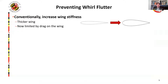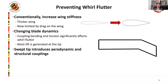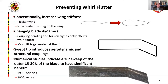A proposed solution is to change the blade dynamics and alter the aerodynamic forcing on the rotor. The coupling of the bending and torsion motion of the rotor blade significantly affects Whirl Flutter. And since most lift is generated at the tip of the blade, by adding a swept tip, we can introduce aerodynamic and structural couplings. Previous numerical studies indicate a 20 degree sweep of the outer 15 to 20 percent of the blade provides a significant benefit to increasing damping and delaying Whirl Flutter to higher speeds.